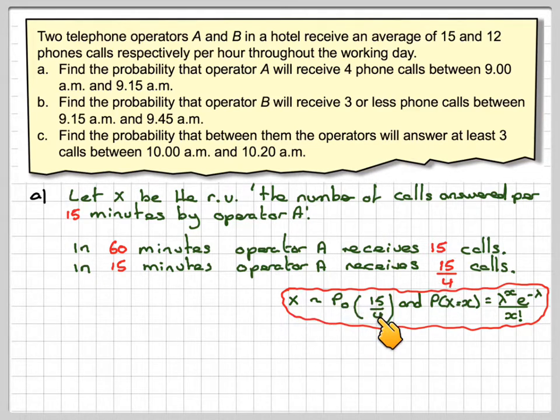So X will be Poisson 15 over 4 and the probability that X is equal to x is lambda to the power of x, e to the minus lambda over x factorial. We want to receive exactly 4 phone calls.